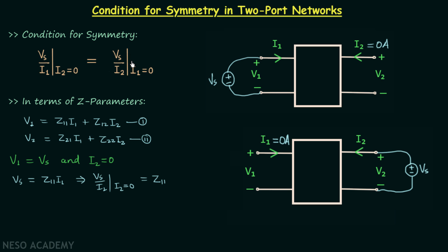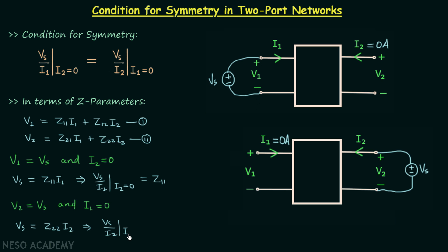For the right-hand side condition, V2 = Vs and I1 = 0. Modifying equation 2 gives Vs = Z22·I2. Hence, the ratio Vs over I2 when I1 = 0 equals Z22. Therefore, the condition for symmetry in terms of Z parameters is Z11 = Z22.